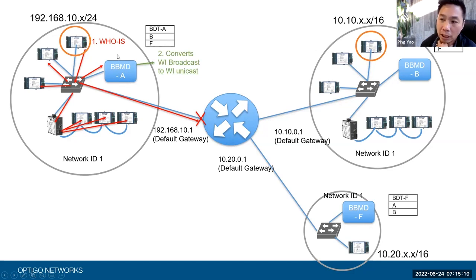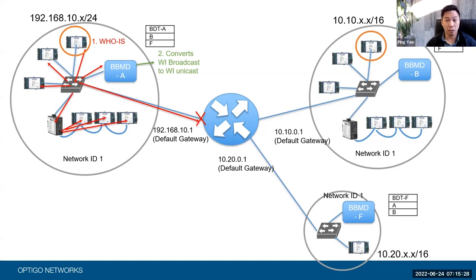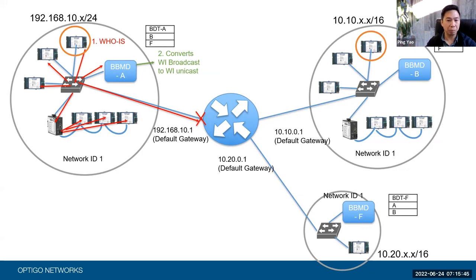BBMD-A sees that this BACnet broadcast message reached it and goes: I've got to do my job. I'm going to take this BACnet broadcast message and convert it into a unicast message. Now, where do I send it? Because if it's unicast, you have to send it directly to a certain place. So it's going to go through its BDT — its broadcast distribution table — and say: who do I send it to? In its BDT, it has B and F. B will be the IP address of BBMD-B, and F will be the IP address of BBMD-F.